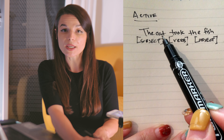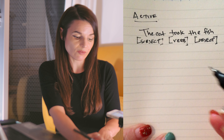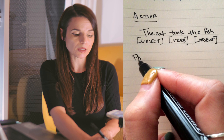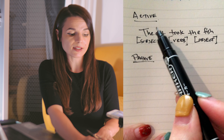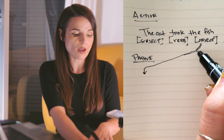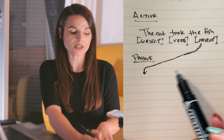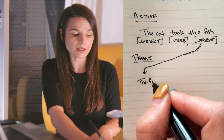In this active sentence, the focus is on the cat — the thing doing the action. So how do we change this to a passive voice sentence? In an active voice sentence, the cat — the subject — is the focus. However, in a passive voice sentence, the object, the thing that is receiving the action, is the focus. In this case, that's the fish.